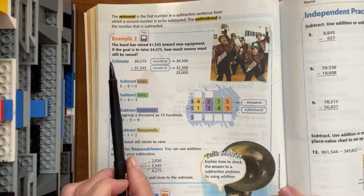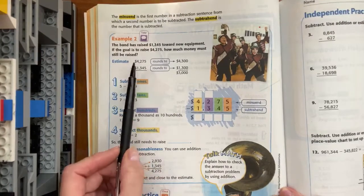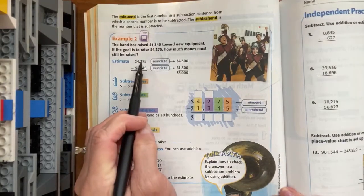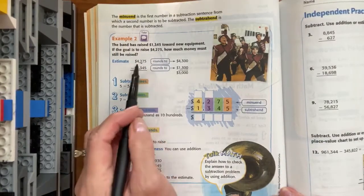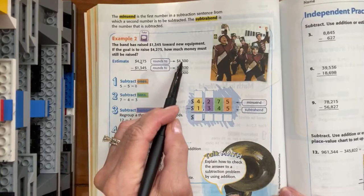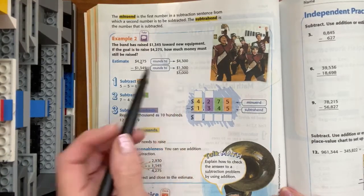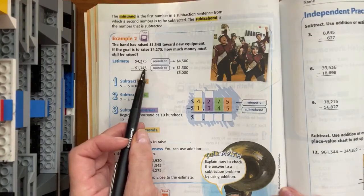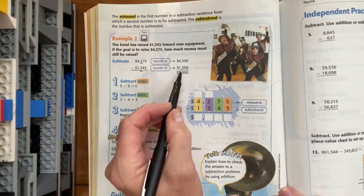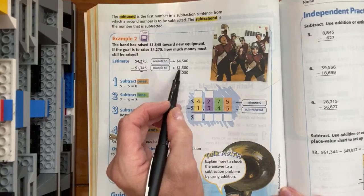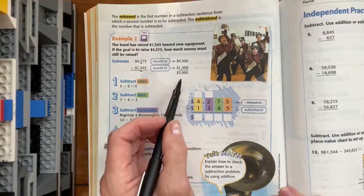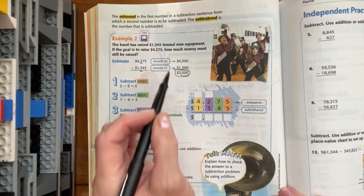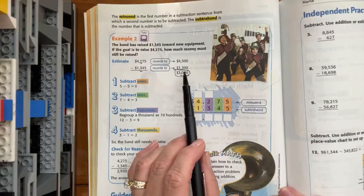And in this estimate they rounded first. So they took 4,275 and they rounded it to the nearest hundred. So 4,275 rounds up to $4,300. They did the same thing with the next number. 1,375 rounded to the nearest hundred rounds down to $1,300. So all in all, when you subtract those, our answer hopefully is going to end up somewhere near $3,000.